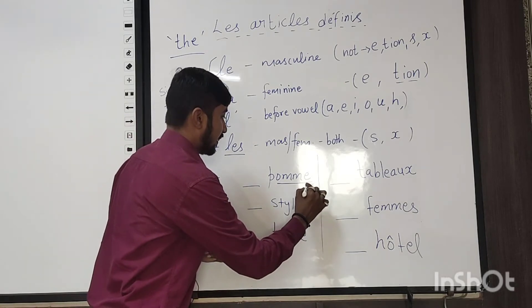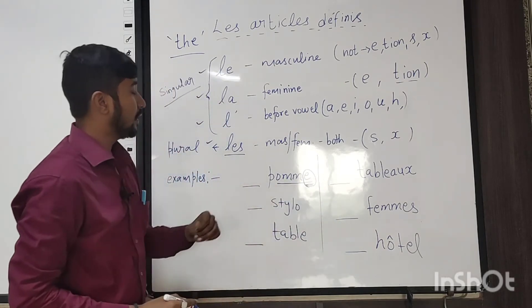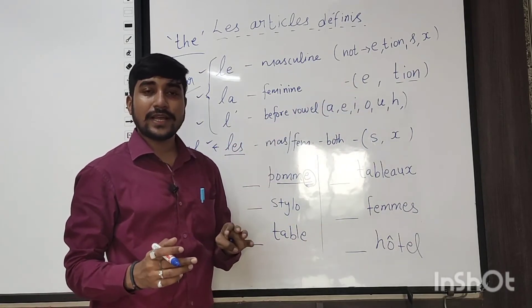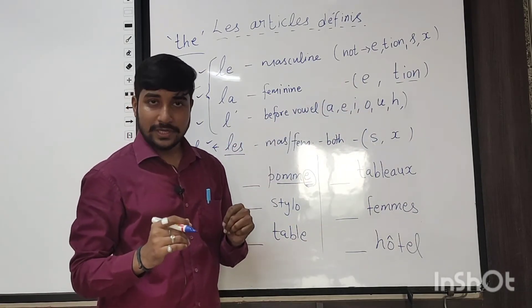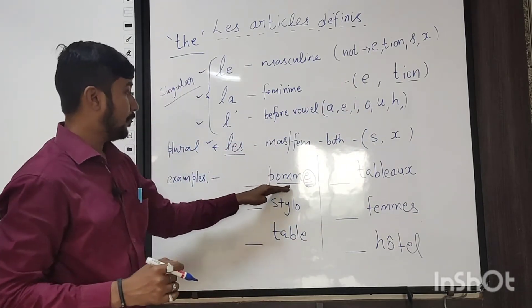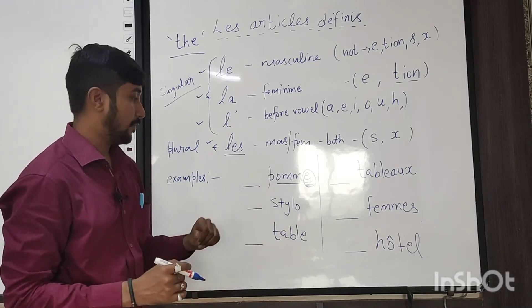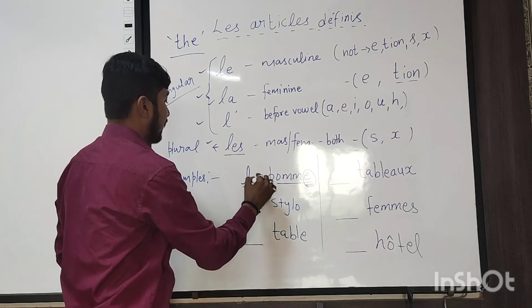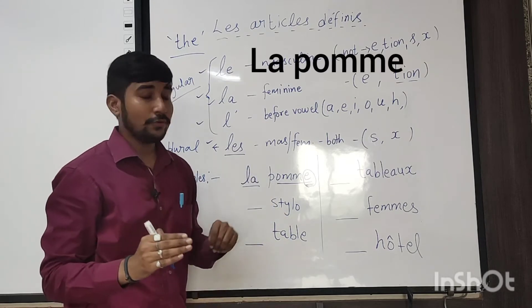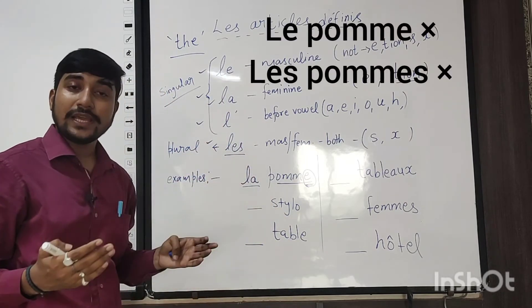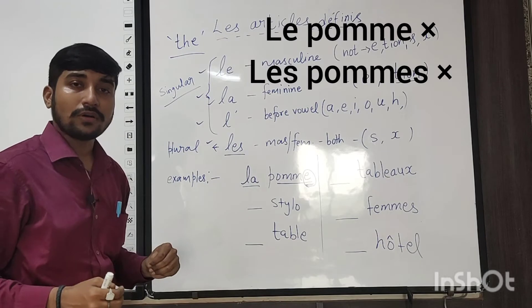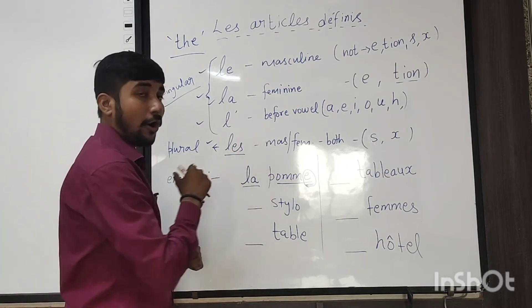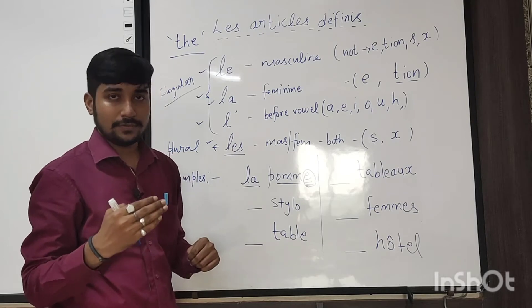You can see the last letter is 'e.' If the last letter is 'e,' the word is considered feminine. So 'pomme' is in the feminine form, and here we use 'la' — it will be 'la pomme.' If you use 'le,' that would be wrong. So 'la pomme' is correct — that means 'the apple.'